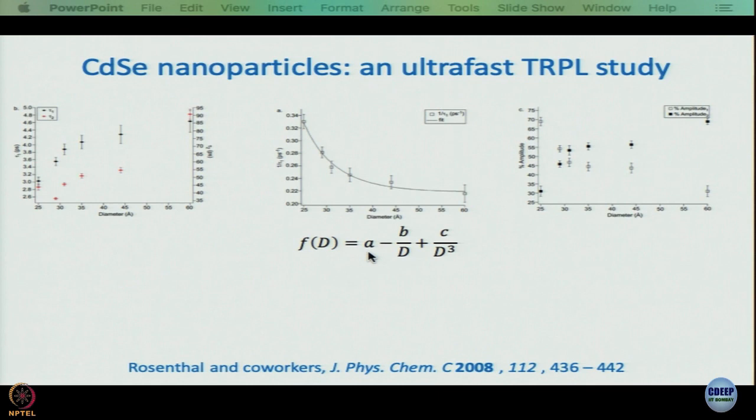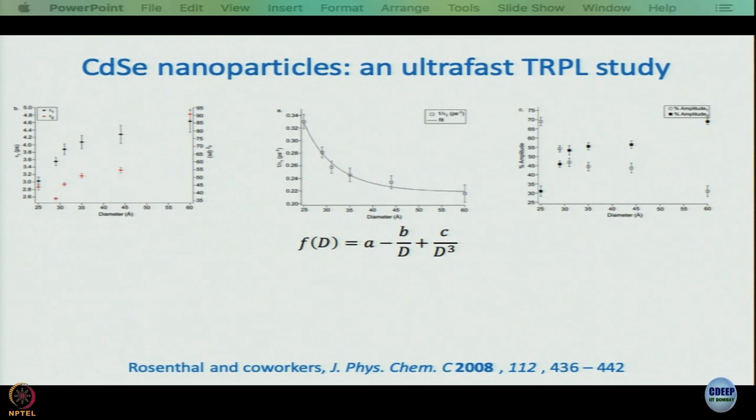What is A? When D equals infinity, the second and third terms vanish, but the rate constant does not become zero — a finite lifetime remains. This corresponds to the bulk material limit. What is the significance of B/D? And C/D³?